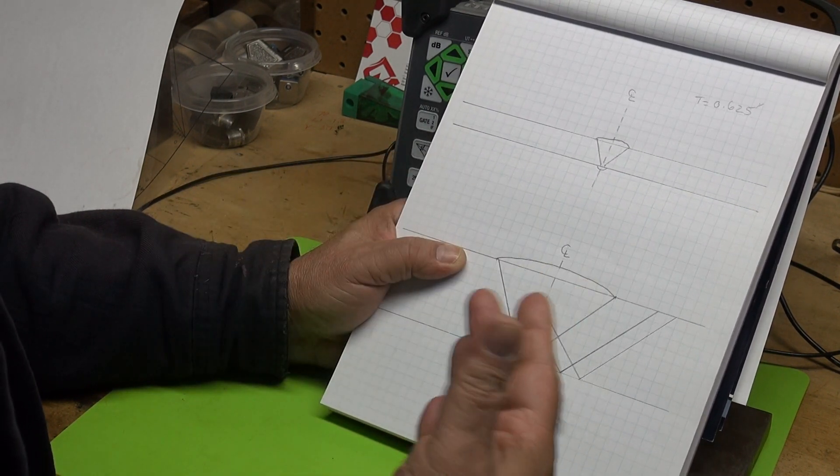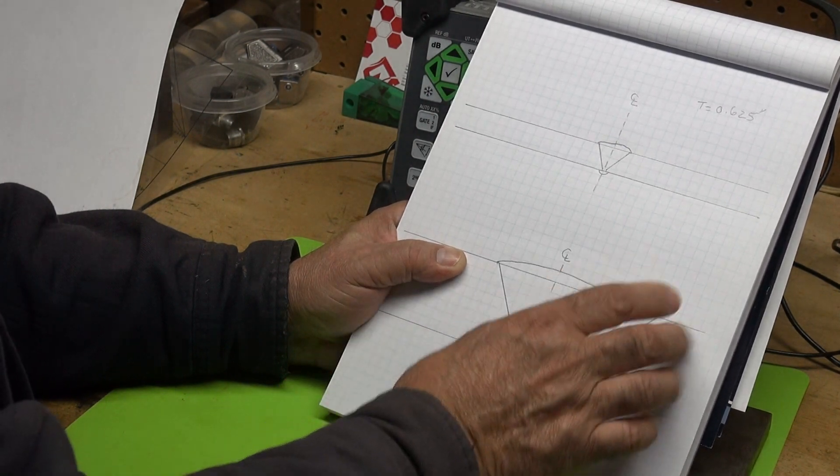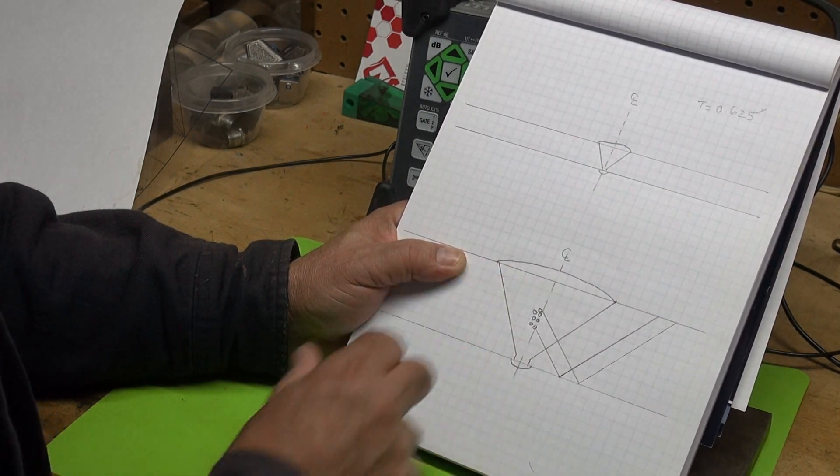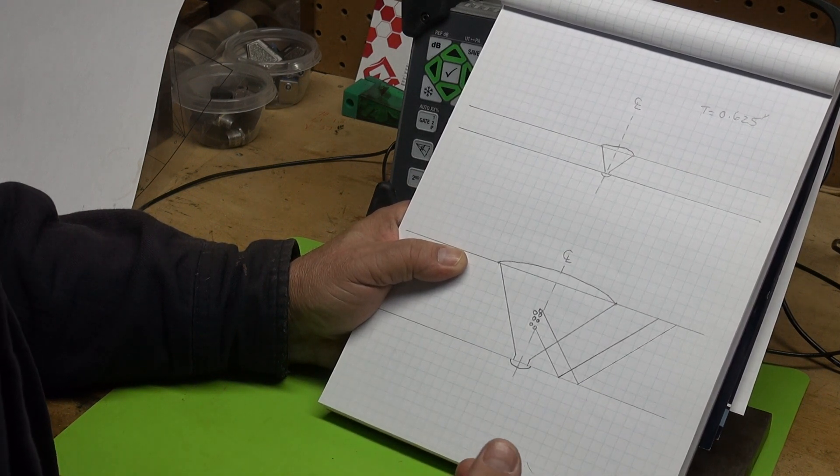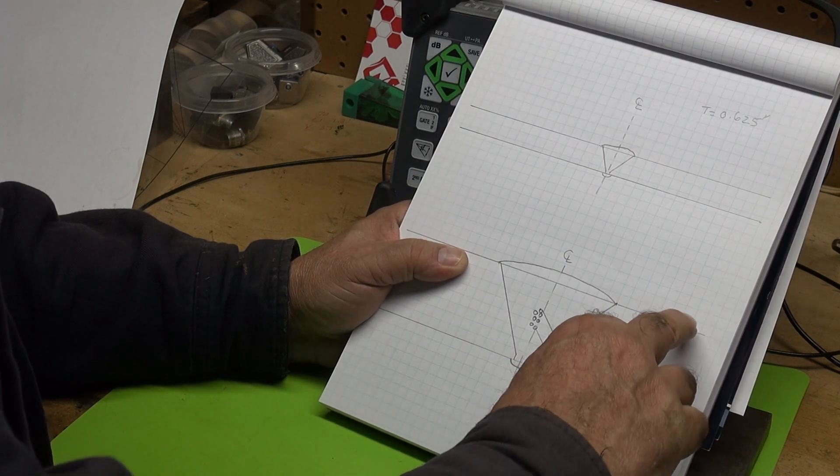I'm using a 60 degree wedge because that helps me interrogate the center, it's good for the body of the weld. I'm using a 5 megahertz transducer because the resolution is good.